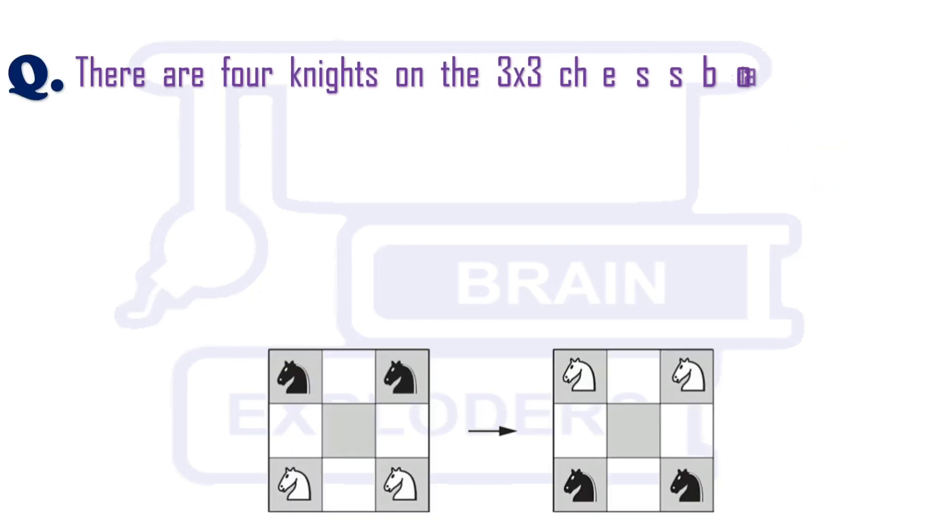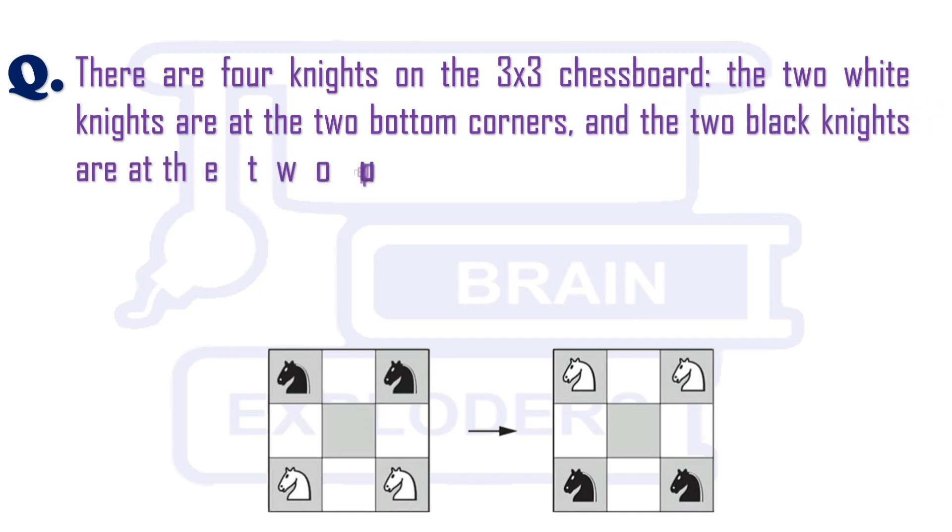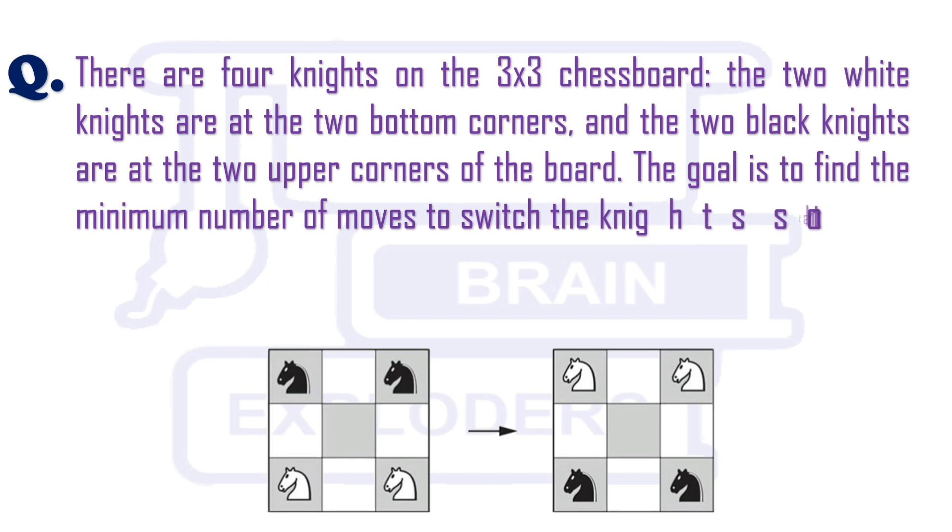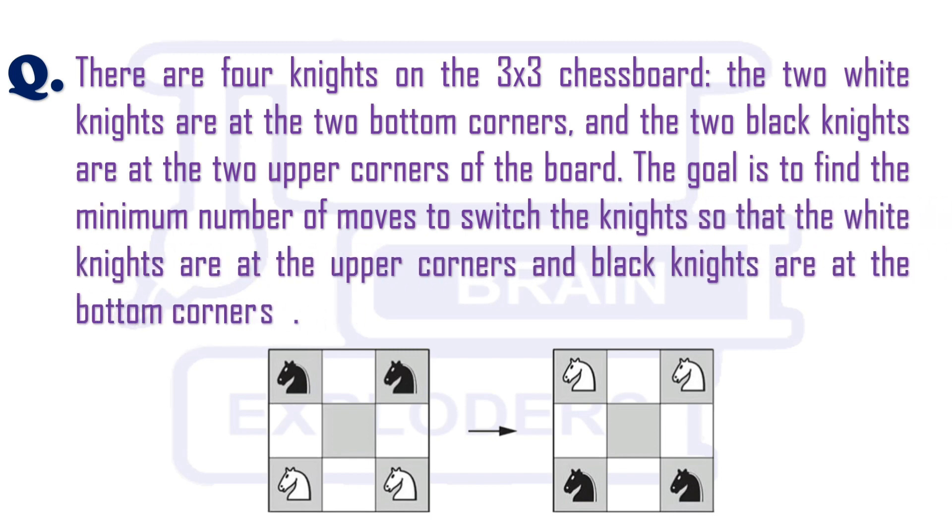There are four knights on the 3 by 3 chess board. The two white knights are at the two bottom corners and two black knights are at the two upper corners of the board. The goal is to switch the knights in the minimum number of moves so that the white knights are at the upper corners and black knights are at the bottom corners.